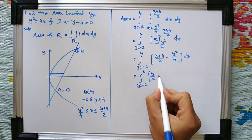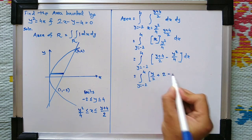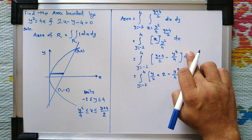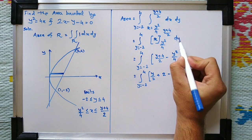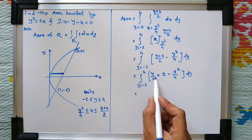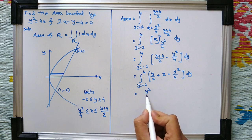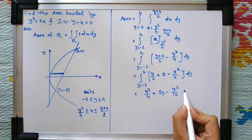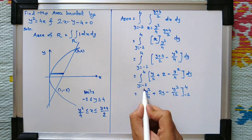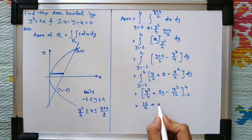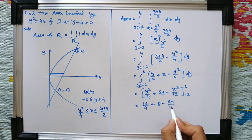Now we integrate with respect to y. The integrand y/2 + 2 − y²/4 integrates to y²/4 + 2y − y³/12, evaluated from −2 to 4. Substituting the upper limit y = 4 gives 16/4 + 8 − 64/12, which equals 4 + 8 − 16/3.